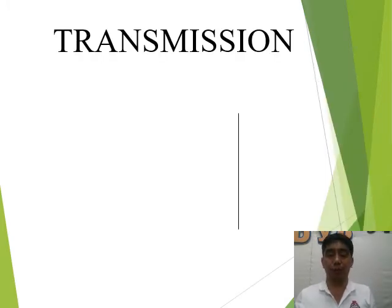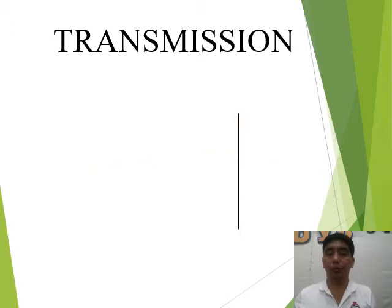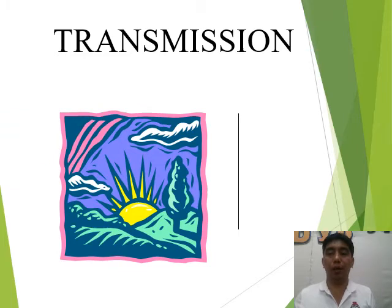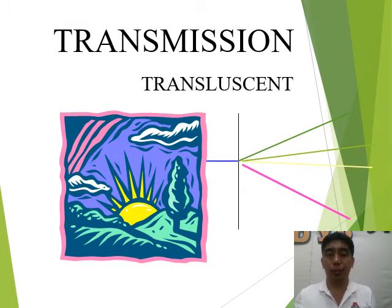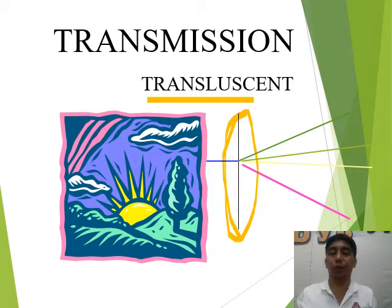The next behavior is transmission, meaning light goes through to the other side. For example, if glass is the medium, light rays from one side pass through to the other side — that is transmission. However, if the medium such as glass is broken or rough, it produces multiple rays on the other side. We call that translucent transmission.